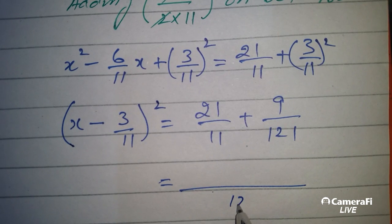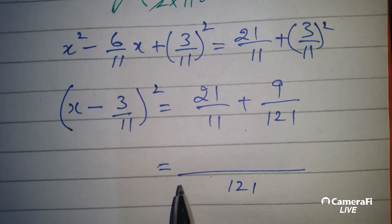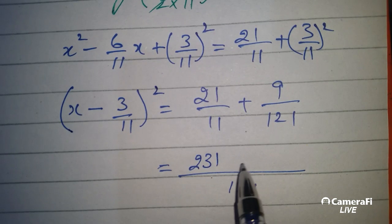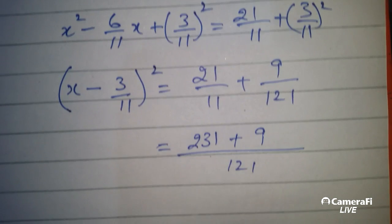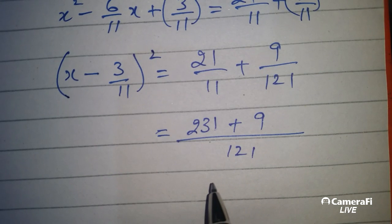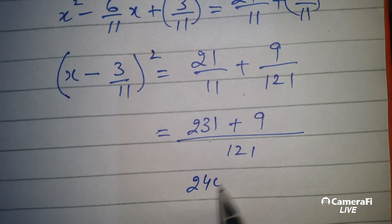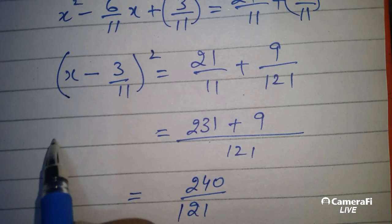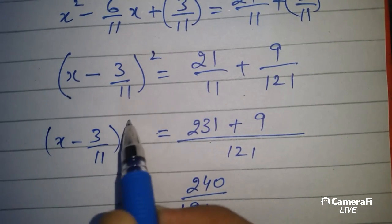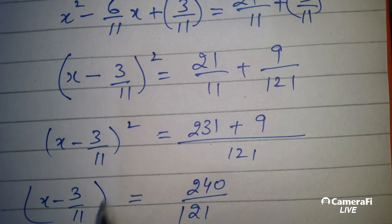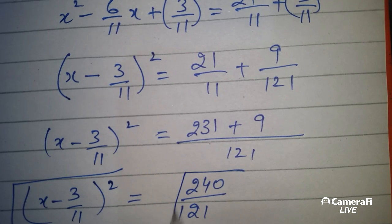Here we have to write: first term x, and here we have to write 9 over 121 x. LCM of 121 and 11 is 121. With the help of a calculator, here we have to write 231 and here we have to write 240 over 121. Then take the square root on both sides.